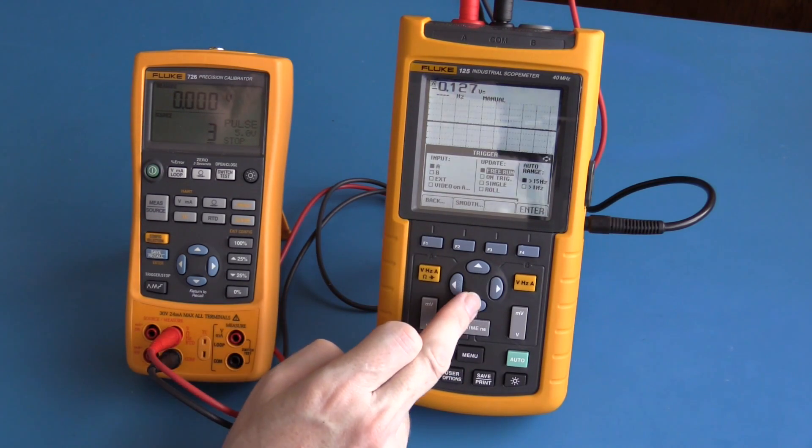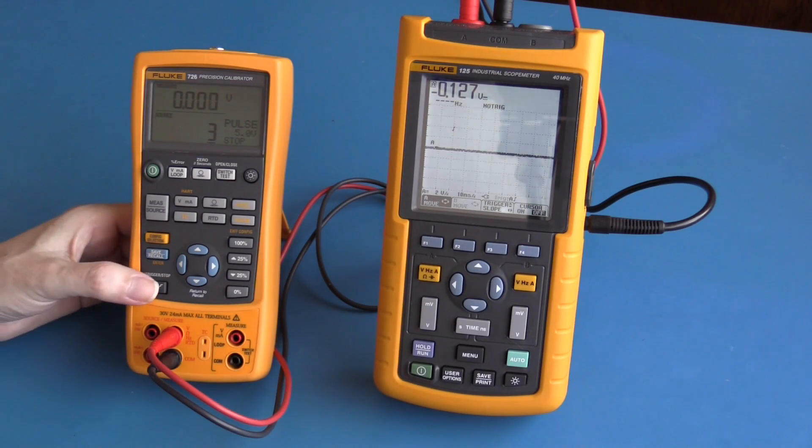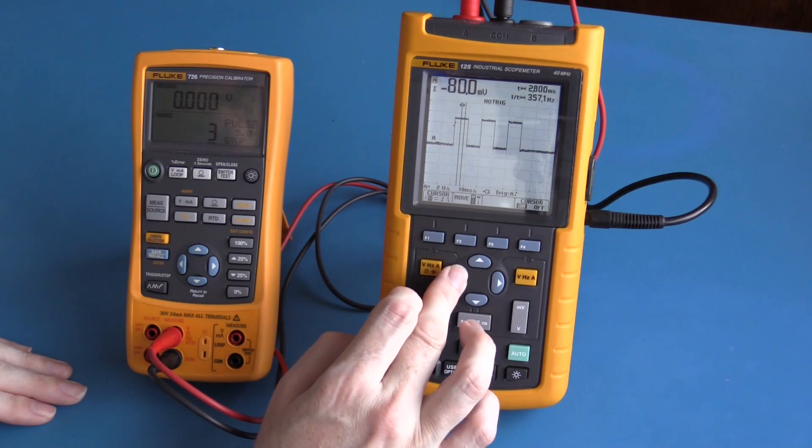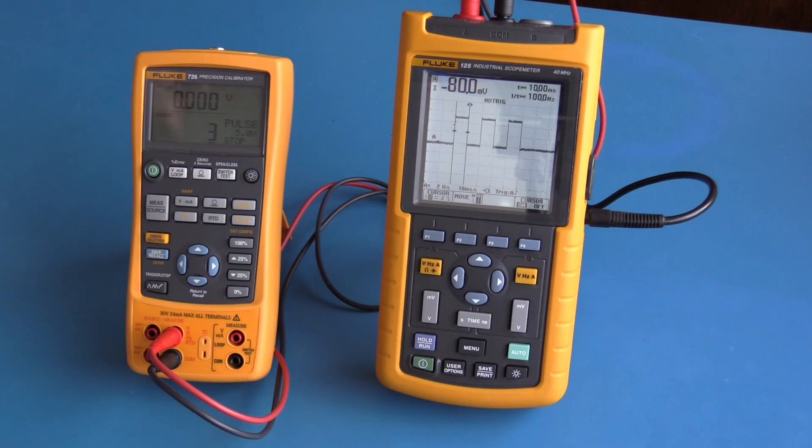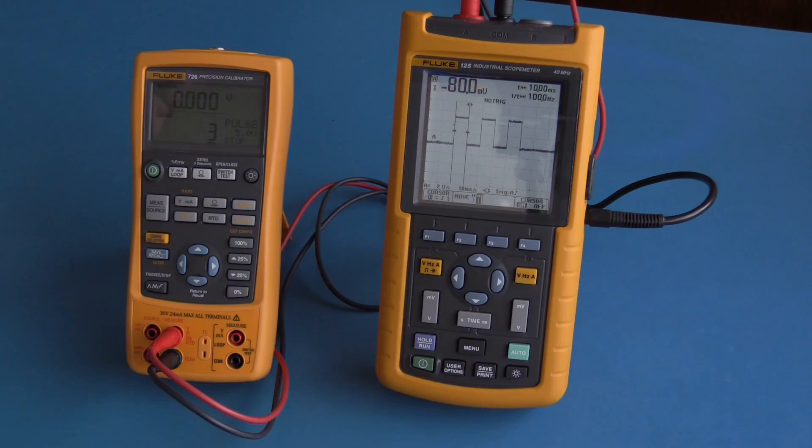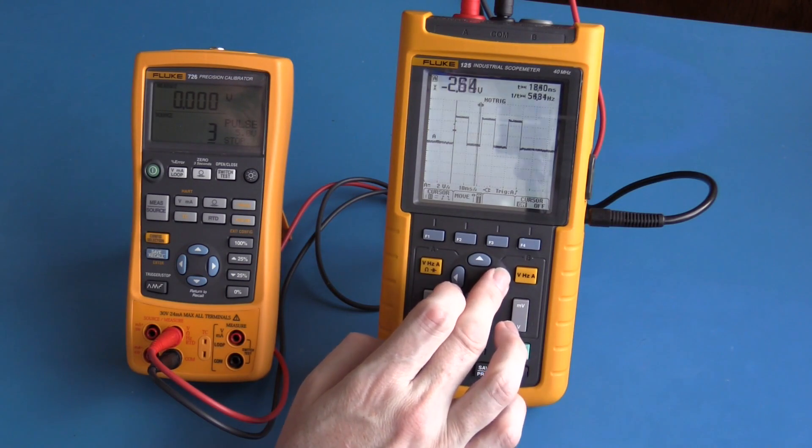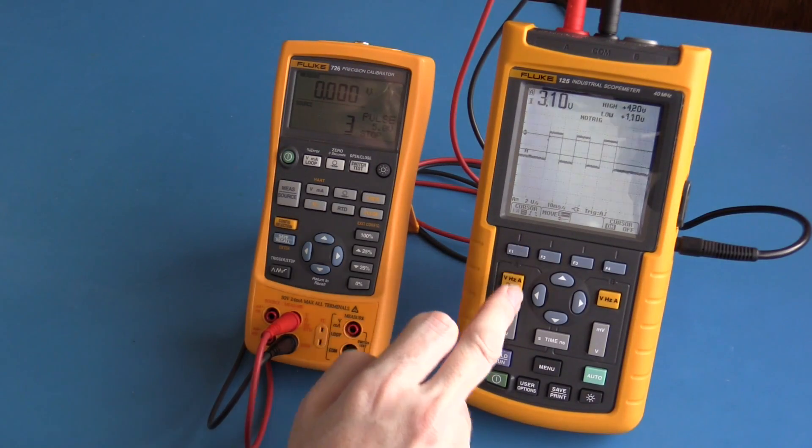To make a pulse width measurement I can set up a cursor. The pulse width is 10 milliseconds. The period is 20 milliseconds which works out to 50 Hertz.